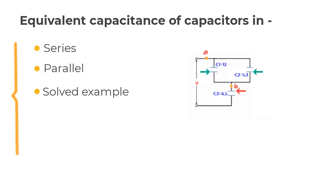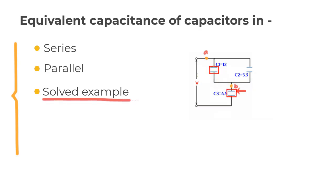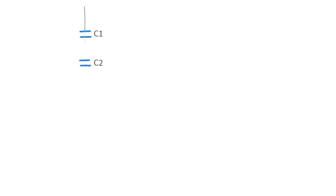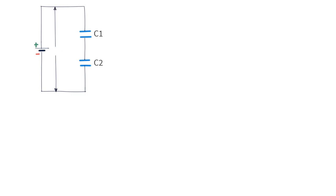Hello and welcome back. In this lesson we will understand how you can calculate equivalent capacitance of two or more capacitors when they are put in series or parallel. Let us consider two capacitors in series and assume that the two are initially uncharged. We will go ahead and charge them by applying a potential difference using a battery that has voltage V, and let us see what really happens when you start this process.